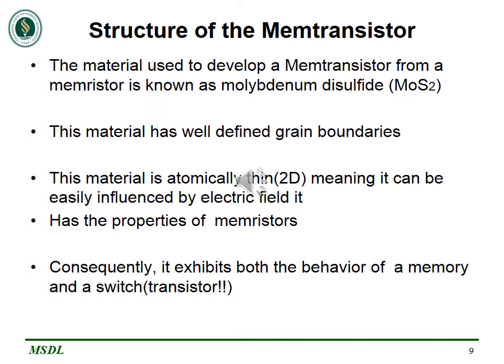Another advantage of molybdenum disulfide is that it is atomically thin, meaning it can be easily influenced by electric field. Since the material is atomically thin, we assume its height is essentially zero, meaning it can easily be influenced by any electric field it comes in contact with. That is one good property of transistors, and it is why MOSFETs have particularly gained popularity today. Also, molybdenum disulfide has the properties of memristors, so it exhibits both the behavior of memory and also a switch, meaning a memtransistor fabricated from molybdenum disulfide can store data and also perform operations that a transistor can perform.